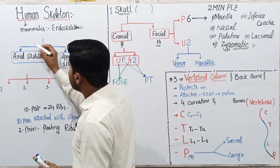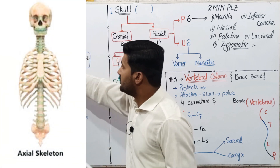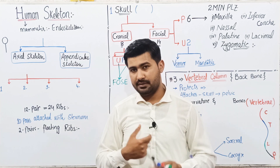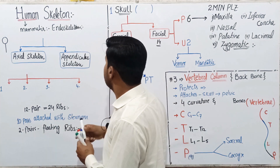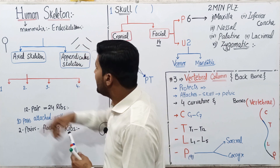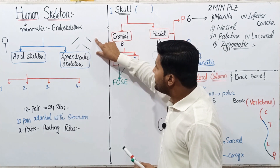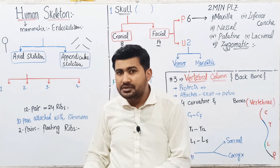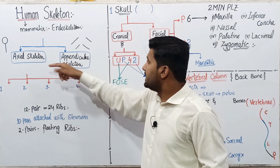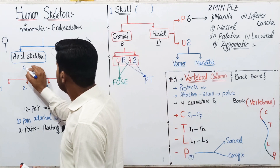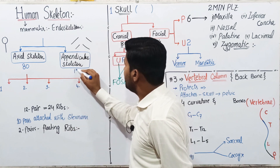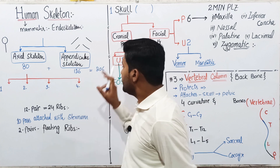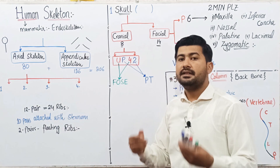The axial skeleton makes the main axis of the body — as the name indicates, axial originates from 'axis.' It includes the skull, ribs, vertebral column, and sternum. The appendicular skeleton consists of appendages protruding from the axial skeleton, such as arms and legs. The axial skeleton has 80 bones and the appendicular has 126, giving a total of 206 bones in the human body.